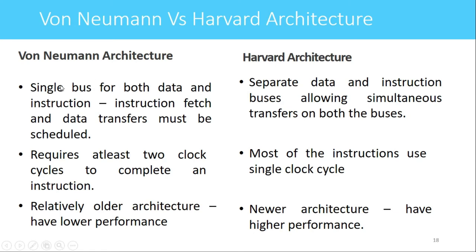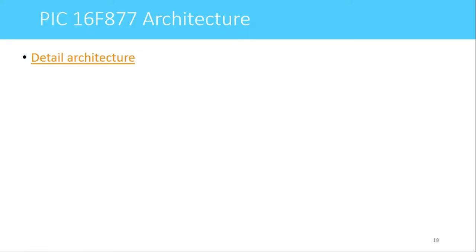In Von Neumann architecture, a single bus is used for both data and instructions, so instruction fetch and data transfers must be scheduled sequentially — first the instruction is fetched, then the data. In Harvard architecture, separate data and instruction buses allow simultaneous access to program memory and data memory within a single clock cycle. Von Neumann is a relatively older and lower-performance architecture, while Harvard is a newer, high-performance architecture where most instructions can be executed in a single clock cycle.